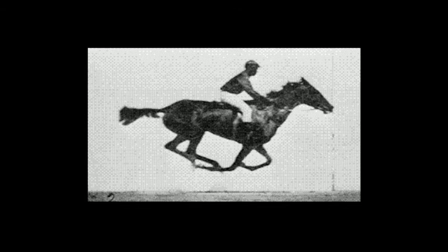He hired Muybridge to take photographs of horses running to try to settle this question. In one of Muybridge's photographs, you can see all four horse's legs off the ground at the same time, but not with the horse's legs extended forward and back.